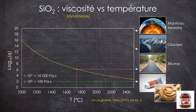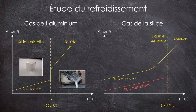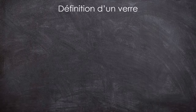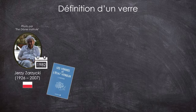Si on reprend notre courbe de refroidissement de la silice, elle continue de suivre la pente correspondant au liquide jusqu'à un moment où on observe une inflexion, après laquelle la courbe devient parallèle à celle de l'état cristallisé. Le point d'intersection extrapolé des deux droites correspond à une température caractéristique qu'on a déjà évoquée : c'est la température de transition vitreuse. Cette transition très particulière, que l'on ne sait toujours pas expliquer en détail, correspond au passage progressif de l'état liquide surfondu à l'état vitreux. Cette transition vitreuse est caractéristique des matériaux vitreux et sera à l'origine d'une nouvelle définition en 1982 donnée par Jerzy Zarzycki, sommité en sciences des verres, entre autres professeur en sciences des matériaux à l'Université de Montpellier, et auteur de l'ouvrage de référence sur les verres nommé « Les verres et l'état vitreux ». Dans son livre, il indique qu'un verre est un solide non cristallin présentant le phénomène de transition vitreuse.